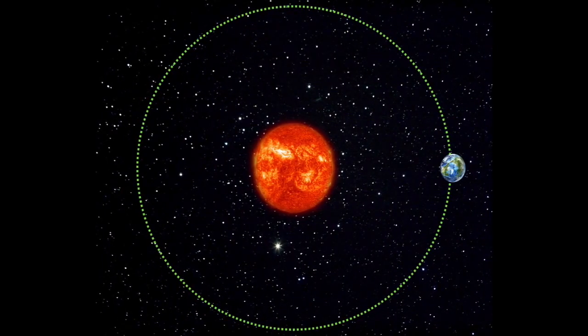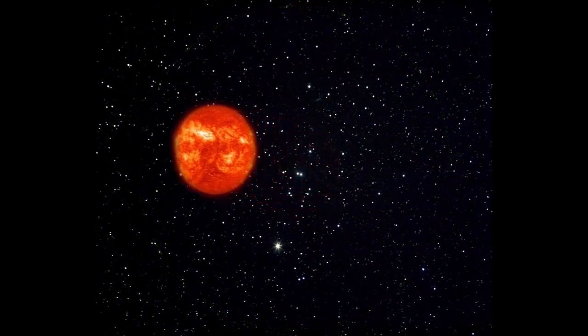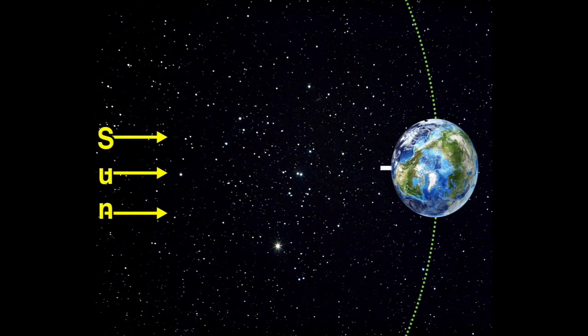Let me attempt to show you why. Here's Earth traveling around the Sun, and I want you to imagine the Sun is on the left-hand side — that's what those arrows represent. That white stick sticking from the Earth represents our noon position. In other words, if you were on the surface of the Earth at where that white stick was, it would be 12 o'clock in the afternoon.